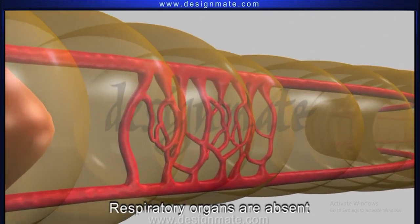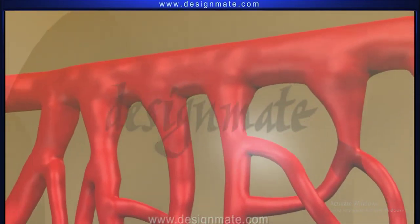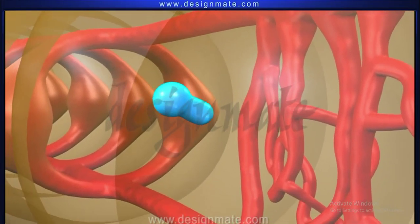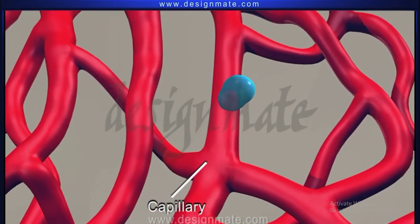Specialized respiratory organs are absent in organisms of this phylum. Respiration occurs by diffusion of gases through capillaries in moist skin.